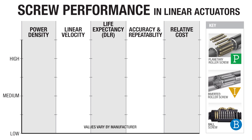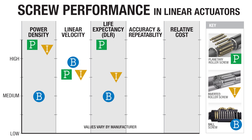In summary, roller screws and ball screws both can offer high repeatability and accuracy. The ideal screw technology for each linear motion installation is based on its design requirements. Tolematic offers both planetary roller screws and ball screws, ensuring the right technology is available for each specific application of industrial electric linear motion.